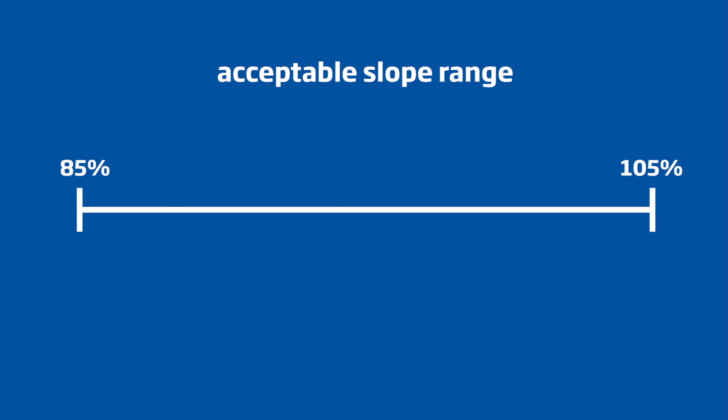The final step for determining the condition of your electrode is to make sure that these values produce an acceptable slope range. The acceptable range for a good electrode is between 85 and 105 percent slope.